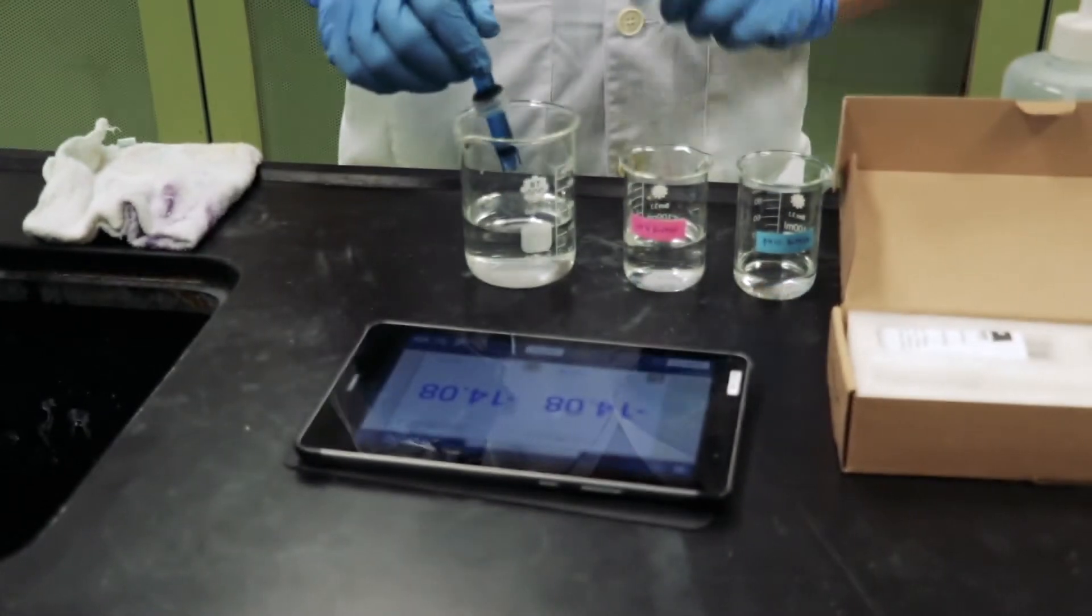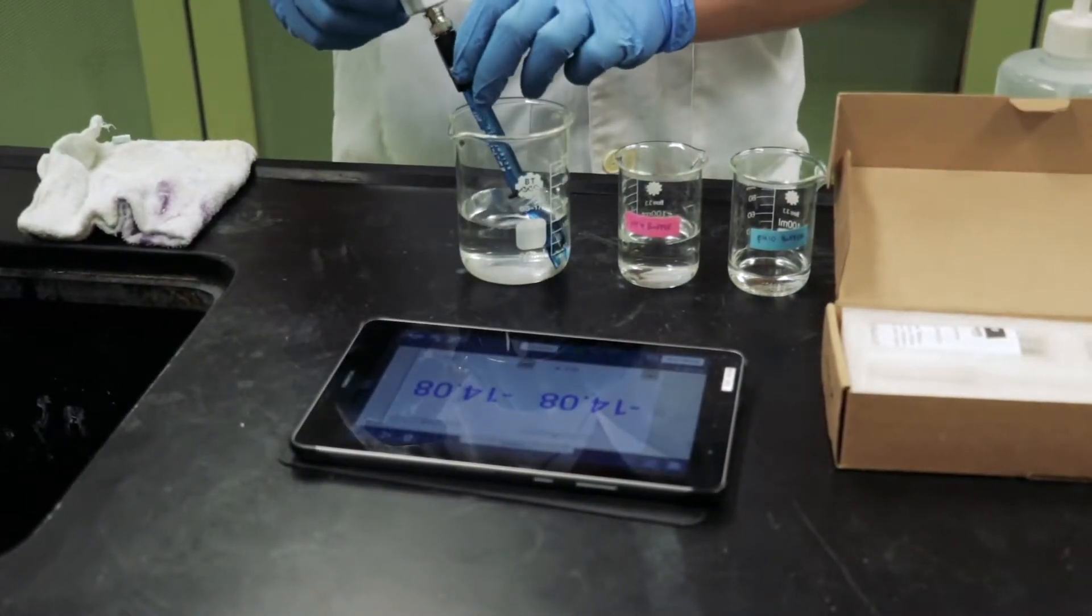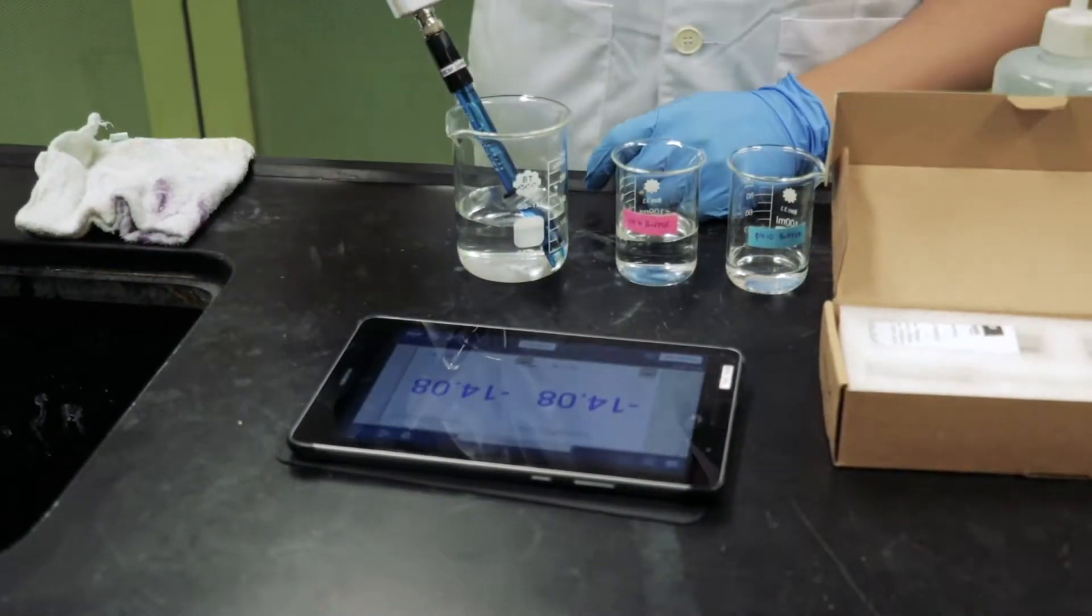Secondly, beware of rims of beakers and conical flasks when immersing the PH Probe in any solution.